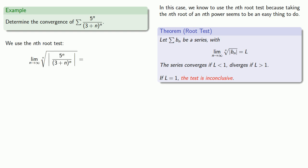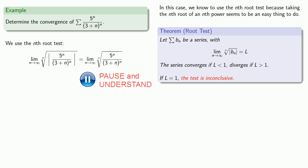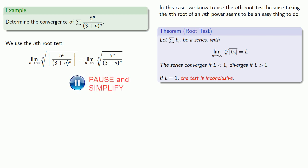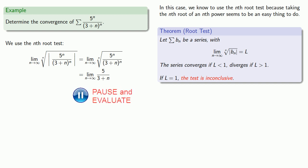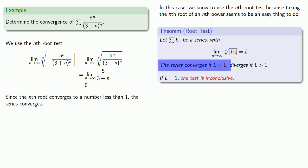For any positive whole number value of n, 5 to the n over (3 plus n) to the n is a positive number, so we don't need the absolute value operators. Since I'm taking the n-th root of an n-th power, those two operations are inverse operations, so I'm left with the limit as n goes to infinity of 5 over (3 plus n), which equals 0. Since the n-th root converges to a number less than 1, the series converges.